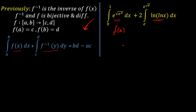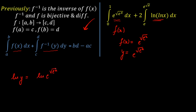Let f(x) = e raised to the power of root over e raised to the power of x. I want to check if f inverse is ln(ln(x)). Let y = e raised to the power of root over e raised to the power of x. Taking natural log on both sides: ln(y) = ln(e raised to the power of root over e raised to the power of x), which gives ln(y) = root over e raised to the power of x, since ln(e) = 1.